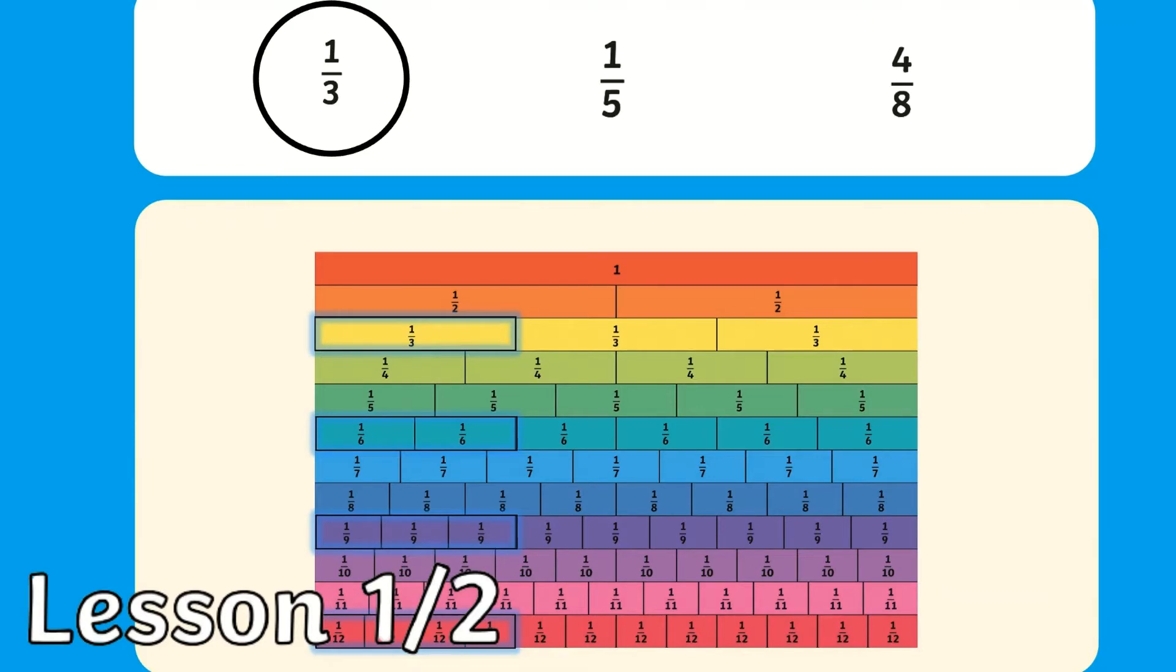Two sixths, three ninths, and four twelfths, because all of those matched up to the same size as one third.